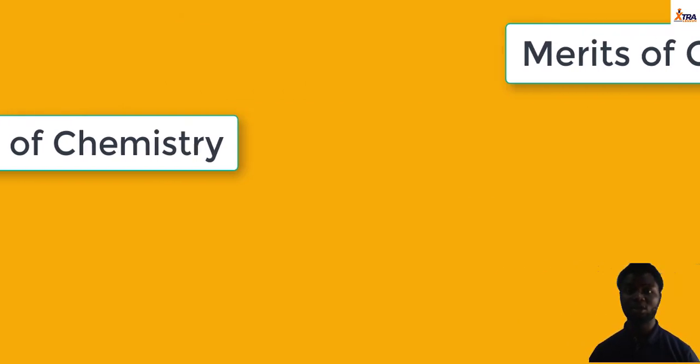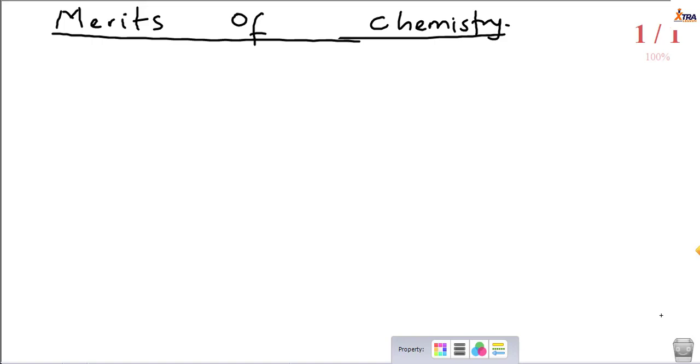Chemistry is applicable in a number of fields. Number one, let's start with medicine. I don't know why I'm starting with medicine, but medicine, so that's application of chemistry to medicine, to engineering, to agriculture, to the industry, production industries.